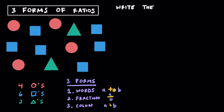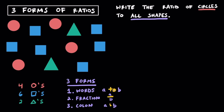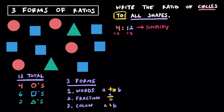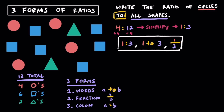Now let's try something different — the ratio of circles to all shapes. When it says all shapes, be sure to include the circles as well. 4 plus 6 plus 2 means there are 12 total shapes. So circles to all shapes is 4 to 12. Simplifying by dividing both by 4, we get 1 to 3 — 1 circle for every 3 total shapes. We can write this as 1 to 3 with a colon, 1 to 3 with words, and 1 to 3 as a fraction. This is a part-to-whole ratio.